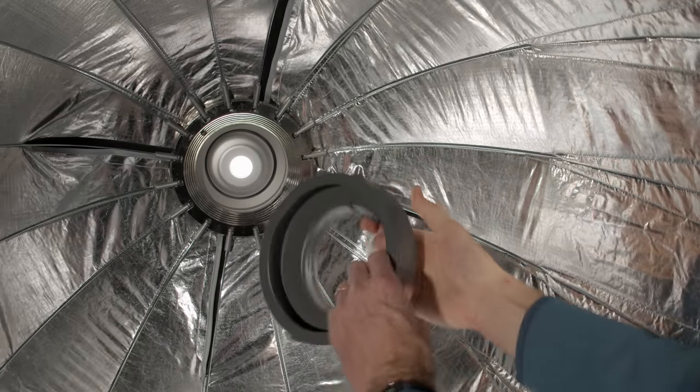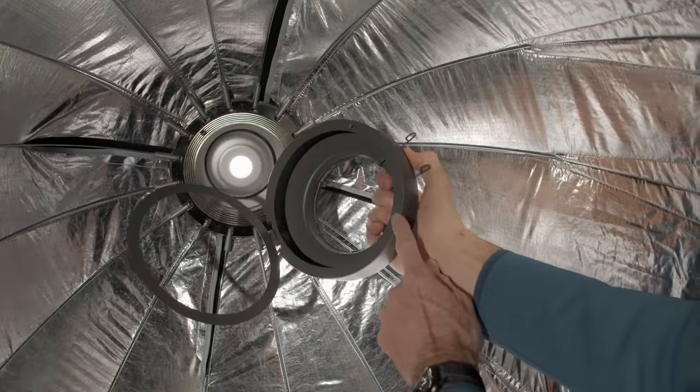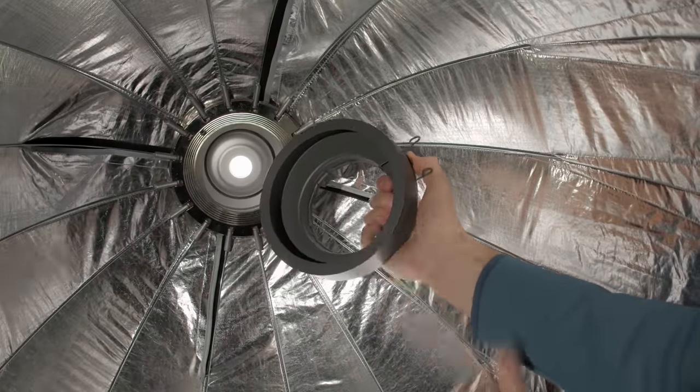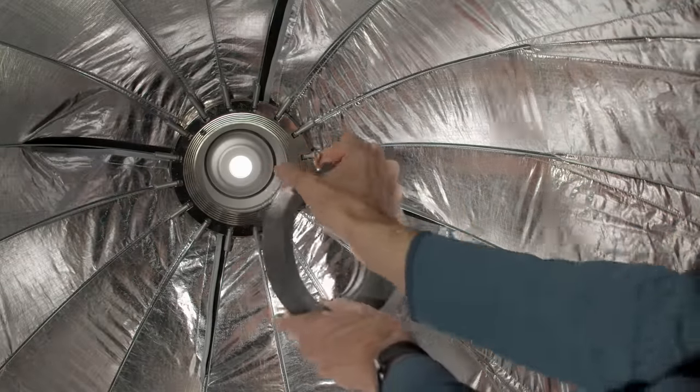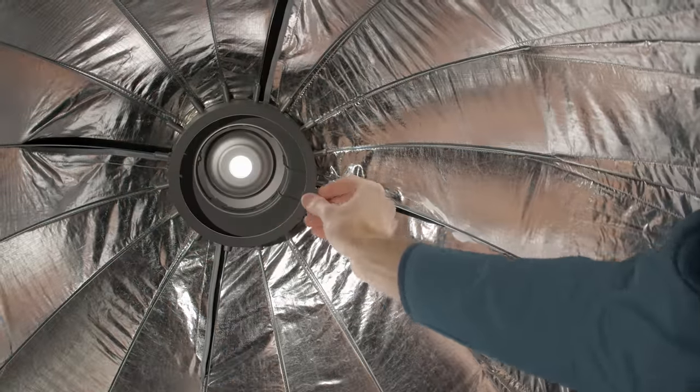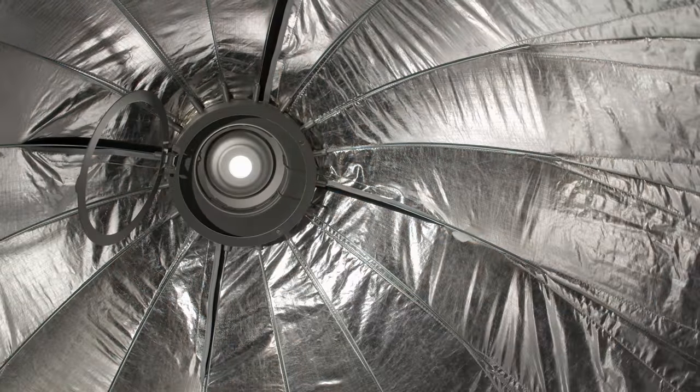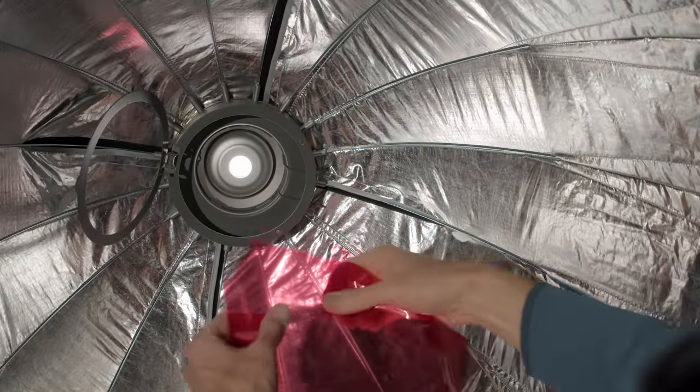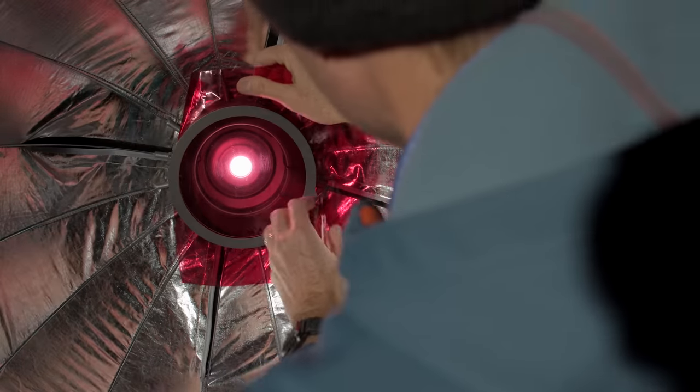Both the Light Dome 2 and the Light Dome Mini 2 are compatible with this new gel holder that just snaps into place. There's a door that opens that's held in place by magnets. All you do is slide in your gel, pop it back in and you're ready to go. Much much easier way to gel your lights if you're using a softbox and not a feature I've seen on any other softboxes.